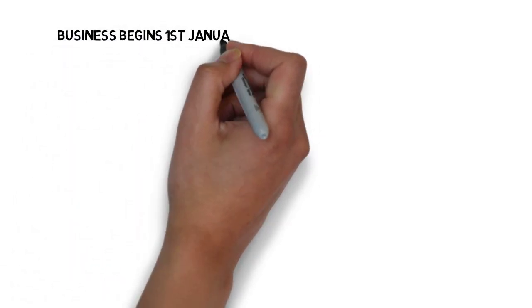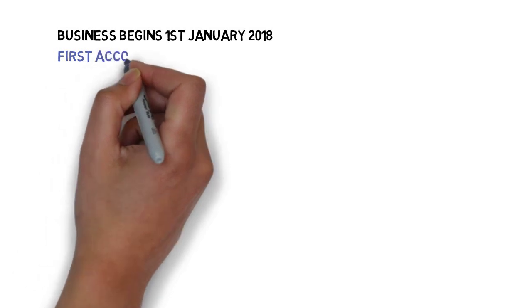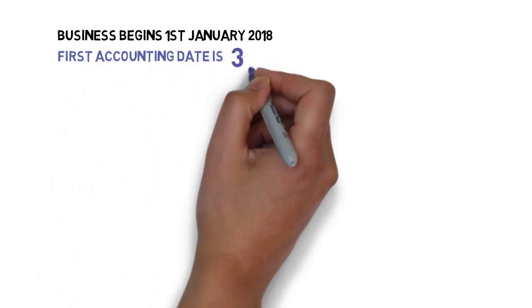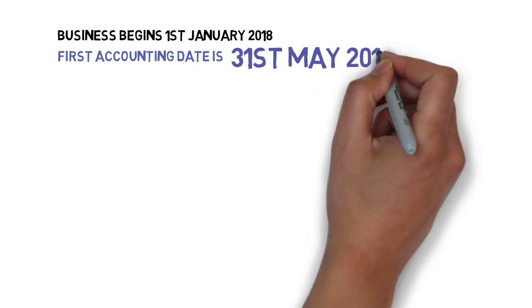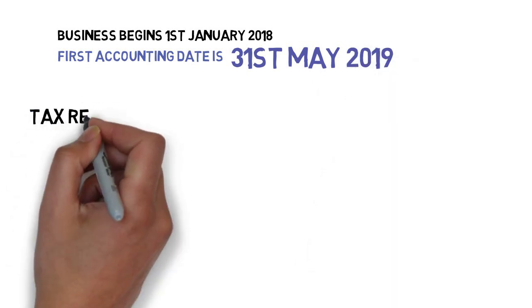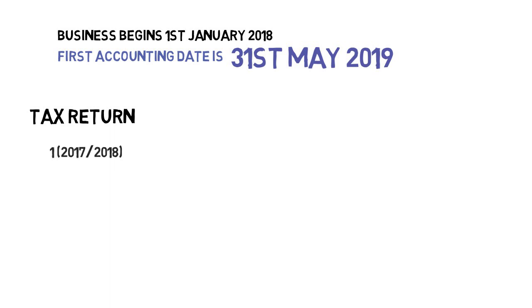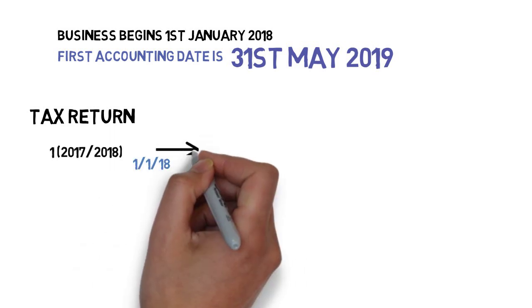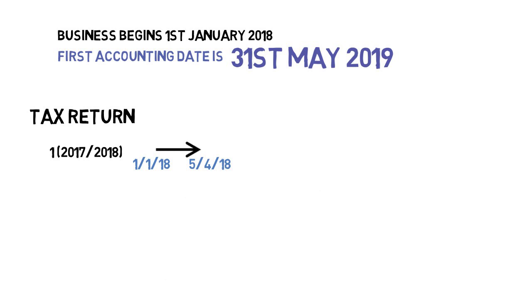In example one, we have a business that began trading on the 1st of January 2018. The owner selects an accounting date of 31st of May, but the first one isn't until 2019. The rules state that the first basis period is until the end of the first tax year, so the basis period is from the 1st of January 2018 to the 5th of April 2018.